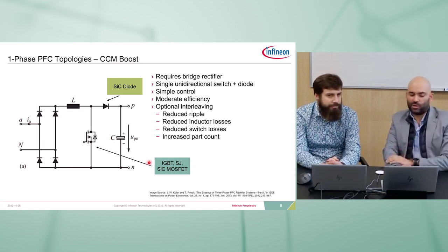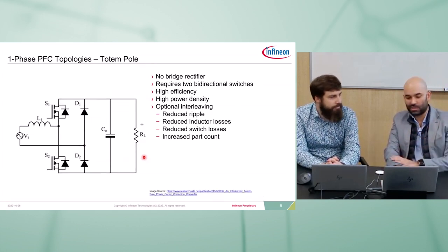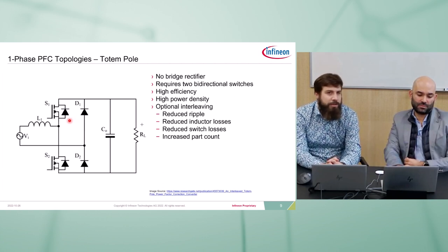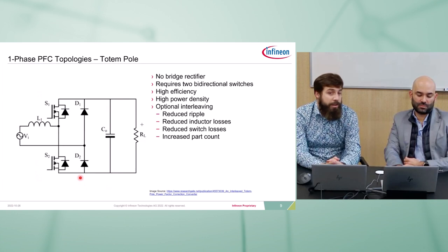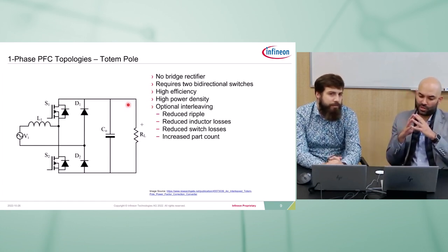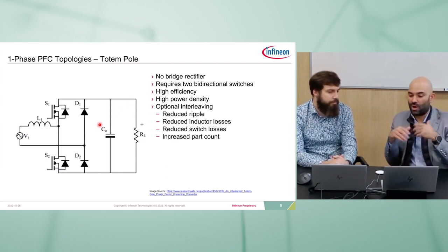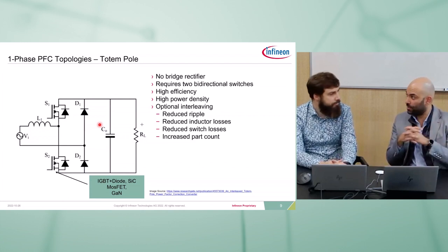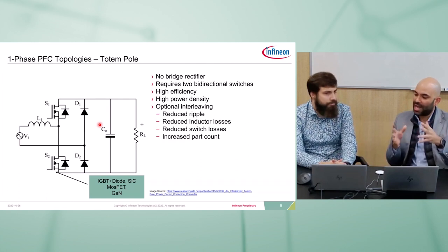Let's look at the next topology — the totem pole, which is talked about a lot recently. Totem pole basically removes the bridge rectifier and replaces one leg with active switches. Those need to be bidirectional because we have to conduct both phases of the AC input current. By removing the bridge rectifier, we have a lower part count, higher power density, and higher efficiency than with the boost PFC. For the active switches, we hear about IGBT plus SiC diode, silicon carbide MOSFET, and often GaN.